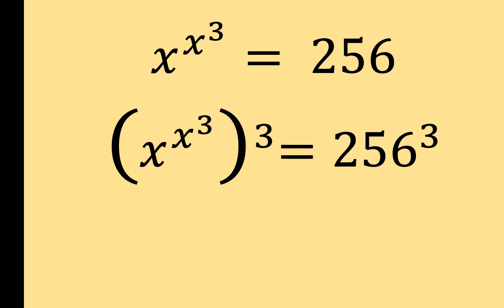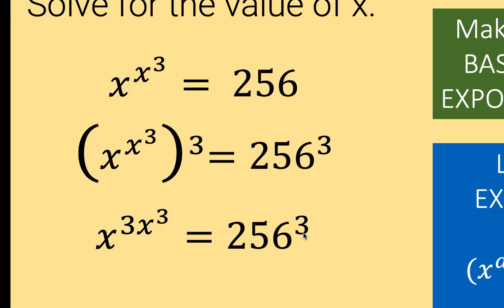Then applying this law of exponent, we can now multiply the exponent x cubed and this exponent 3 to arrive at this result. Notice now that x cubed times 3 is equal to 3x cubed. And then we just copy 256 cubed.